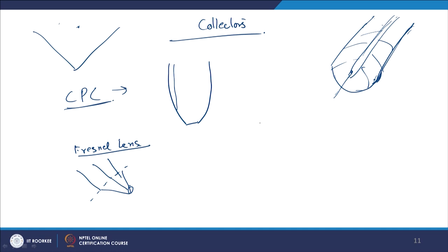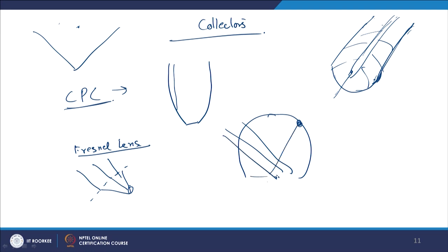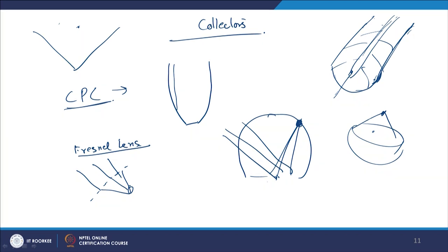There are also fixed circular collectors with a moving receiver — the solar radiations fall on the surface, get reflected, and are collected at a receiver that moves in a circular path. These are known as fixed circular concentrating with moving receiver collectors. There are also parabolic dishes used for concentrating solar power, giving different geometric options for concentrated solar energy.